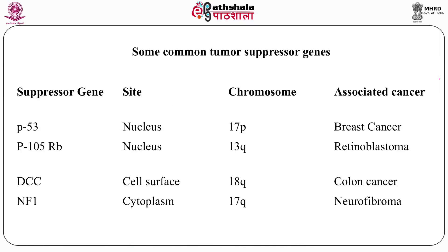Similarly, there are common tumor suppressor genes. Suppressor gene P53, located in the nucleus on chromosome 17p — its suppression is associated with breast cancer. Suppressor gene P105RB, located on chromosome 13q — attributable to retinoblastoma. Suppressor gene DCC, located on the cell surface on chromosome 18q — attributable to colon cancer. Suppressor gene NF1, located in the cytoplasm on chromosome 17q — associated with neurofibroma.